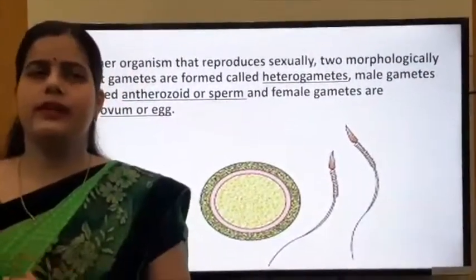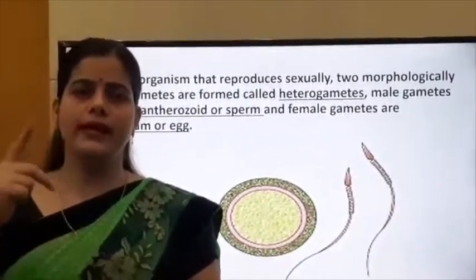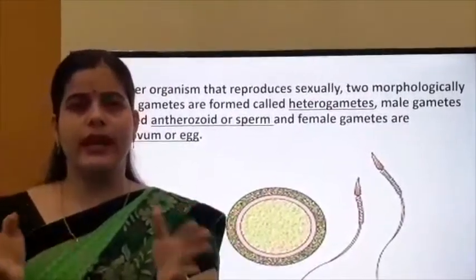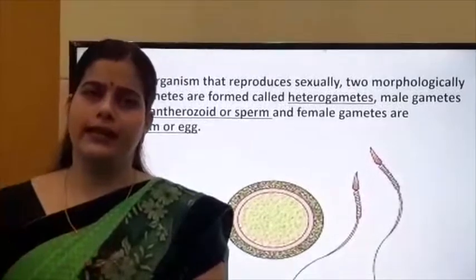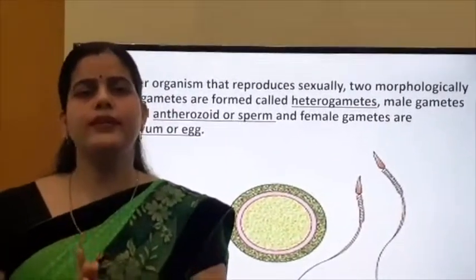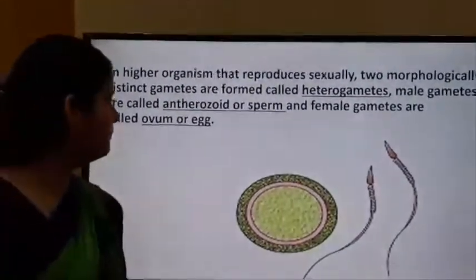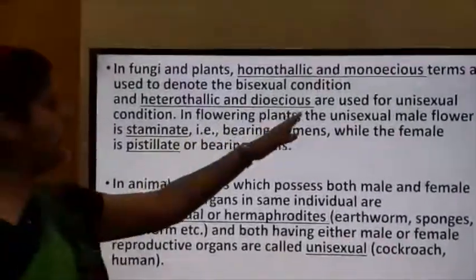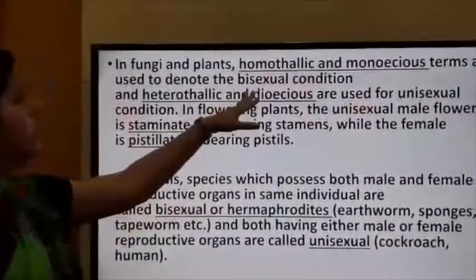So gametes are categorized into two types: homogametes (similar in structure, also called isogametes) and heterogametes (dissimilar in structure, also called anisogametes).